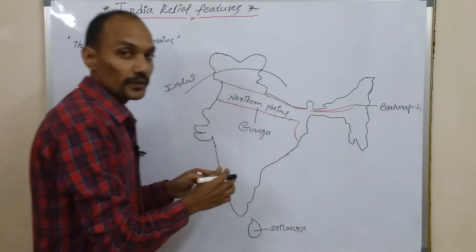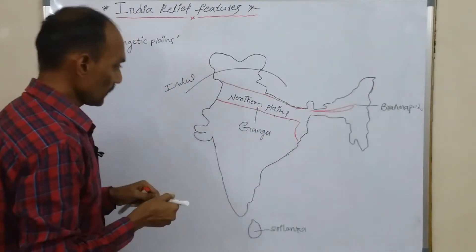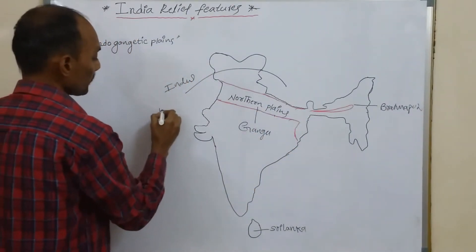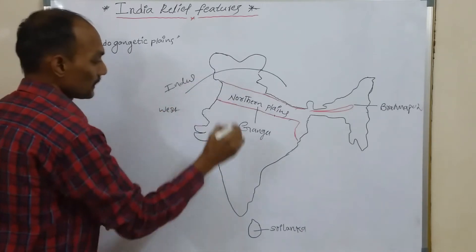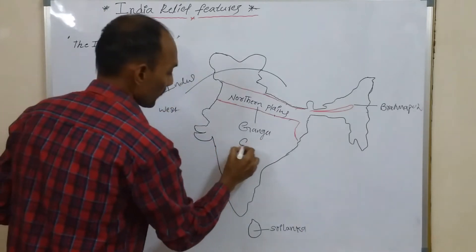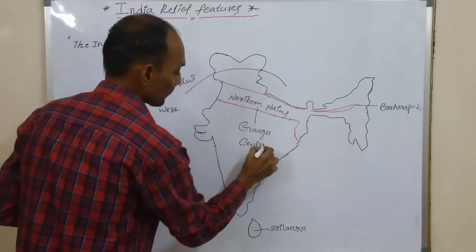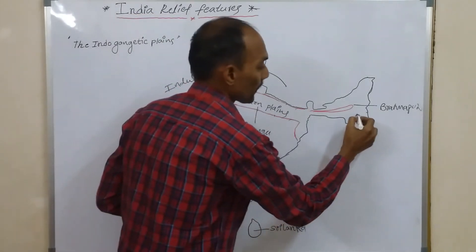Geographically, these northern plains are divided into three parts: the western part, the central part, and the eastern part.